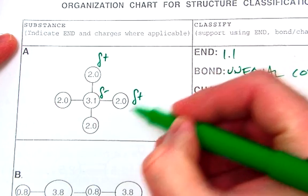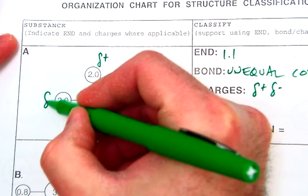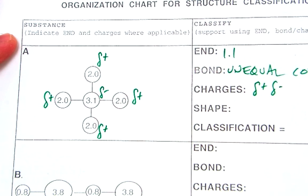Now, all these bonds are exactly the same, so we're going to assign partial positives to all of these. Now, in terms of the shape, in terms of how we're going to classify, the shape is going to help us classify this.